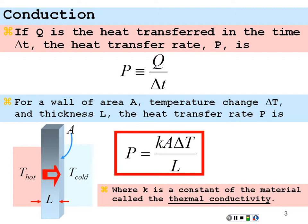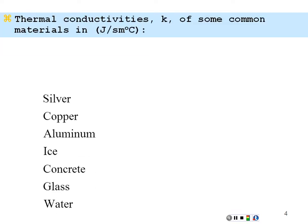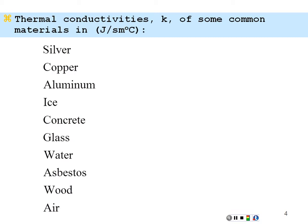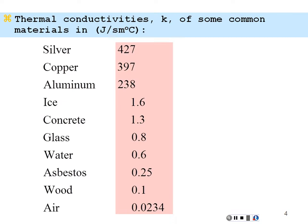Where K is a constant of the material, otherwise known as the thermal conductivity of that material, and would be an intrinsic property of the material itself. Here are some common thermal conductivities of some common materials in joules per second per meter per degree Celsius. Silver, 427. Copper, 397. Aluminum, 238. These are very good thermal conductors, most likely because they are very good electrical conductors. They have free electrons that can transfer the energy easily.